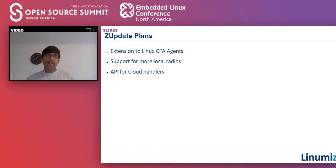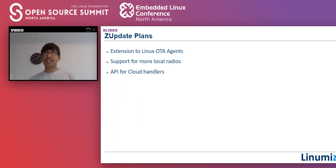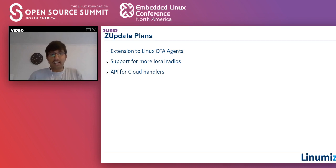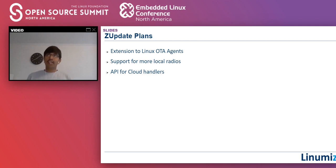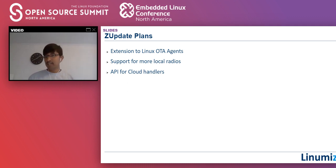The Z Update solution is currently underway — the base infrastructure is ready but local radios like LoRa are not yet covered and need further extension. We are working on it and plan to merge it into Zephyr mainline. The architecture is designed to be modular — extendable to any cloud solution like Update Hub or Hawkbit, handling local radio cases, and supporting Linux OTA agents like SW Update or Mender.